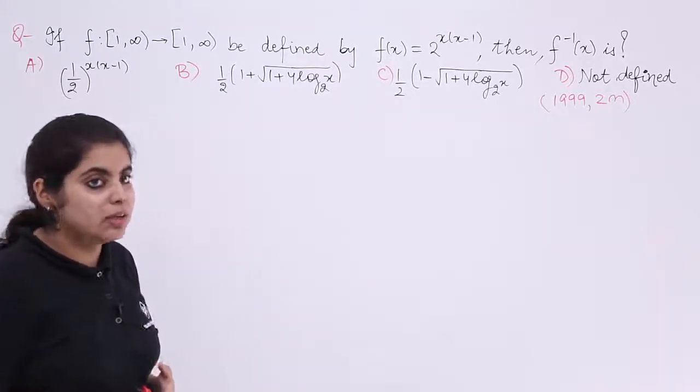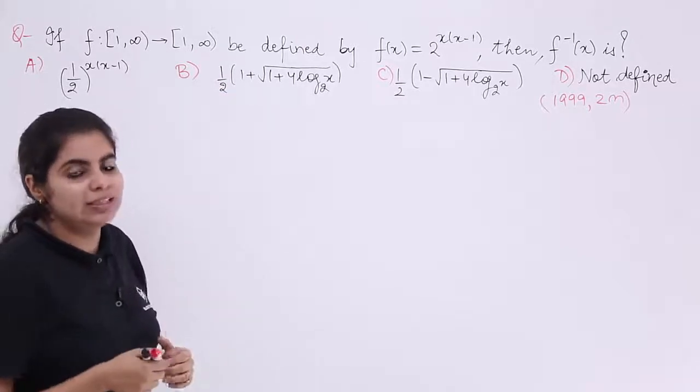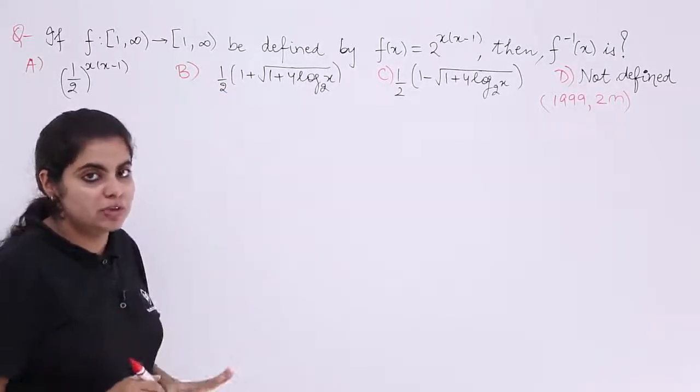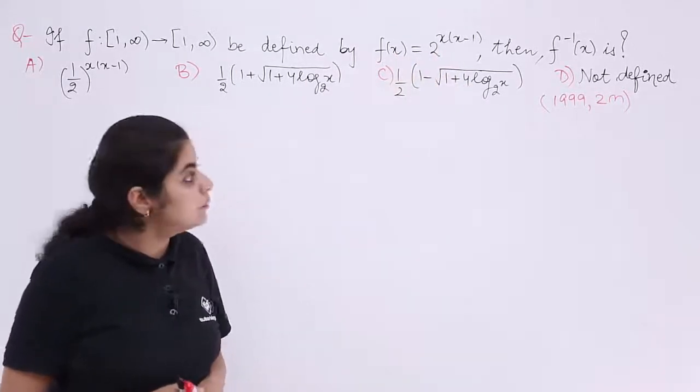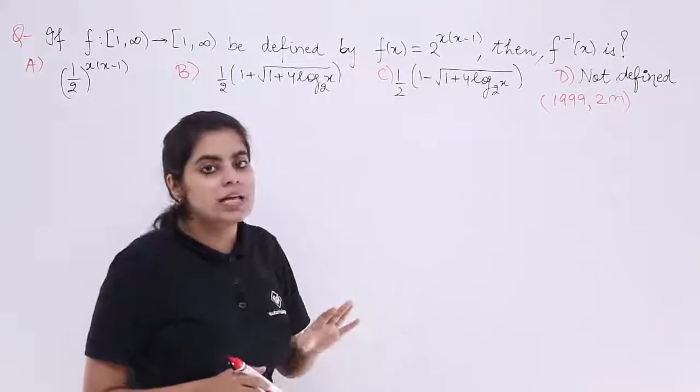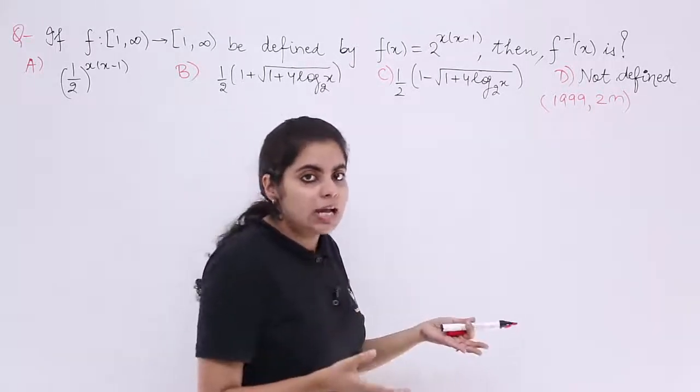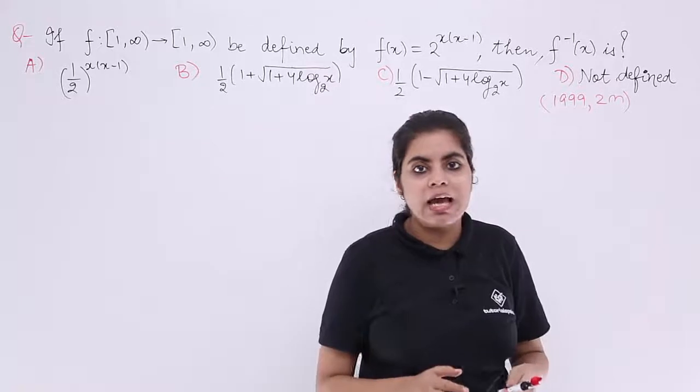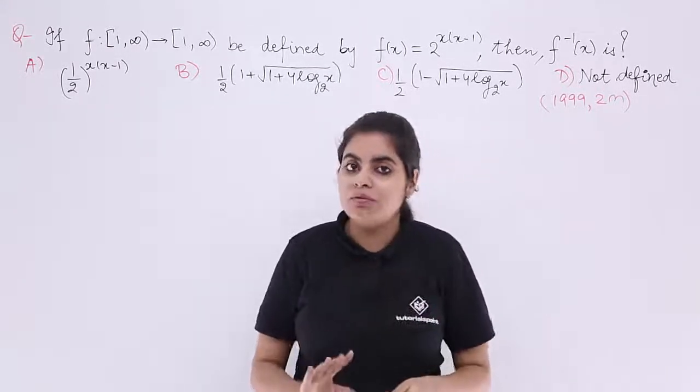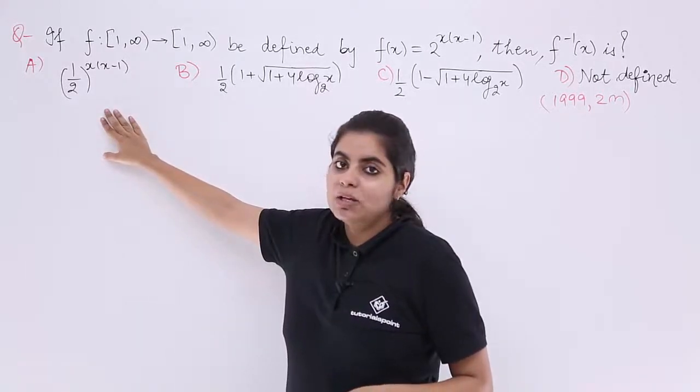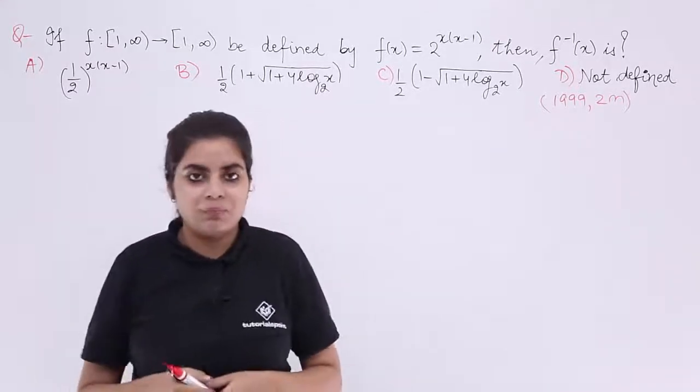Let's read the question together. The question is: a function is given to you from 1 to infinity to 1 to infinity. That means the domain and the range is specified and it is defined by f(x) is equal to 2 raised to the power x times x minus 1. Then f inverse x is what? The last option I could see there directly is not defined. That means either the function has the inverse defined or it has it not defined. If it is not defined, it is option number D. If it has been defined, what are the values? The A option is 1 by 2, power x times x minus 1, B is something in the roots, C is also something in the roots.